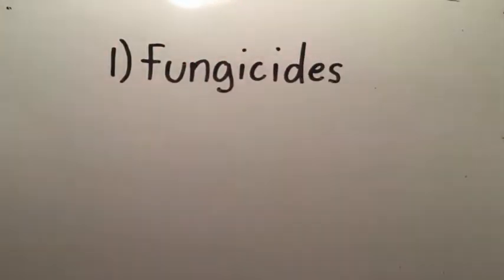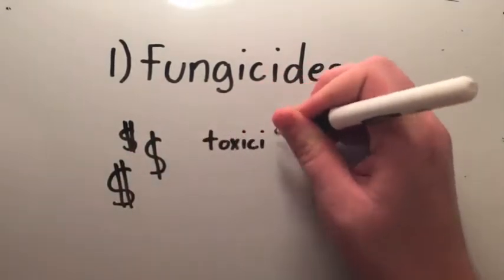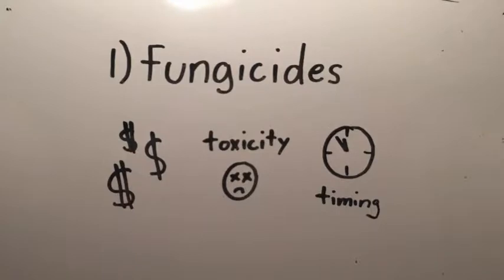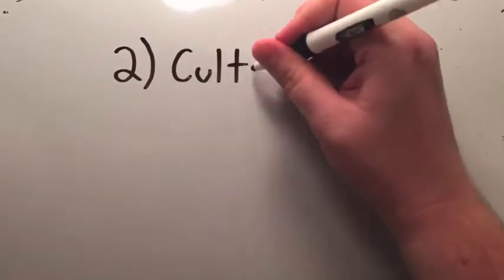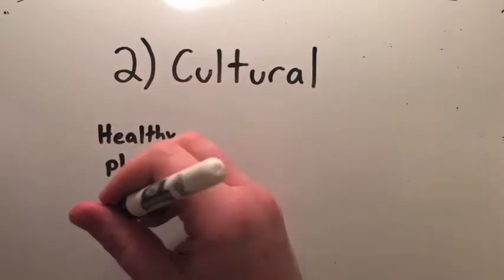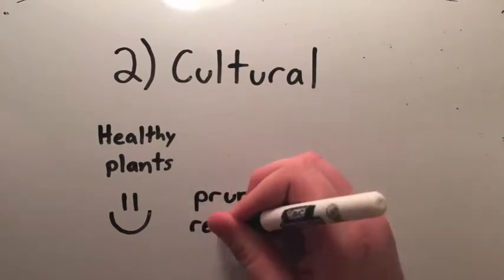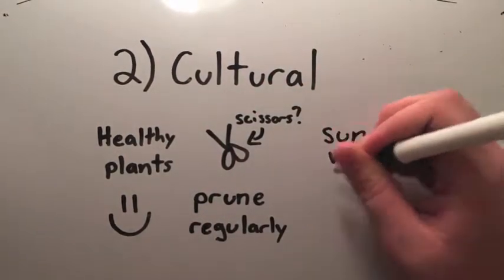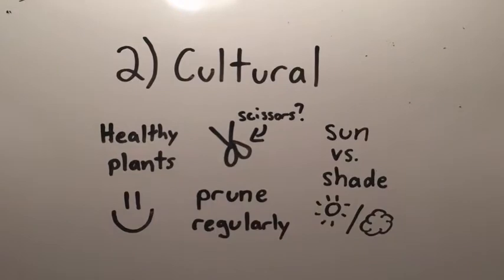Fungicides have proved to be very successful against the spread of coffee leaf rust, but are too expensive for most farmers. They can also be toxic to the environment, and multiple well-timed applications are required. Keeping plants healthy with fertilizers and pruning plants to increase airflow can help to prevent the spread of disease, and there is current debate over whether planting coffee in full sun or partial shade actually has a significant effect on susceptibility.